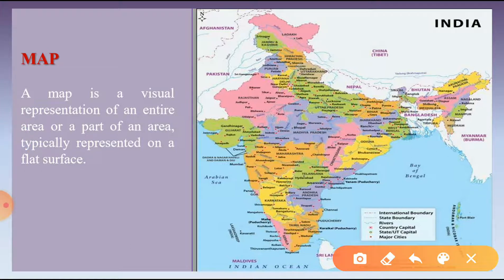A map is a representation or drawing of Earth's surface or a small part of its surface drawn on a flat surface to a scale. A map is a visual representation of an entire area or part of an area. The work of a map is to illustrate specific and detailed features of a particular area and to present information about the world in a simple and visual way. Maps show size and shapes of countries, locations of features, and distances between places.